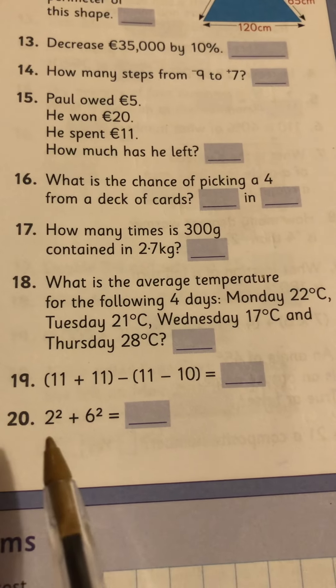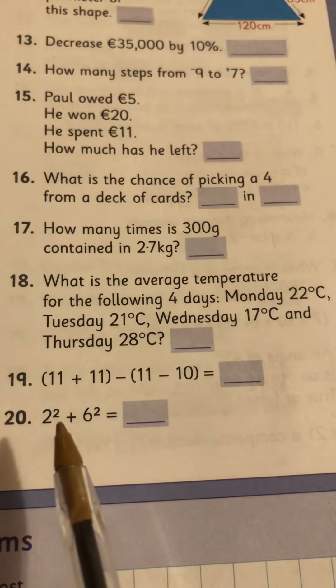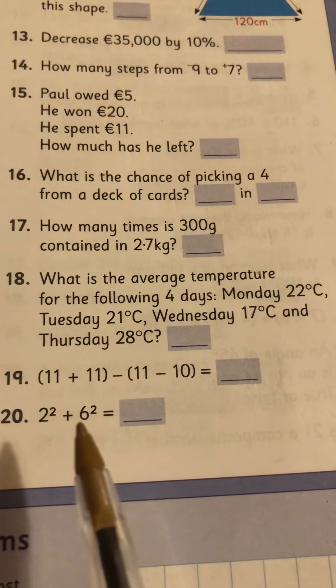And number 20, 2 squared plus 6 squared. So that's 2 by 2 plus 6 by 6.